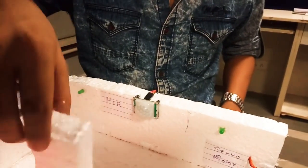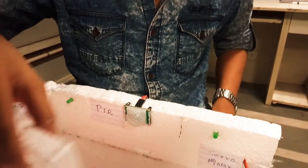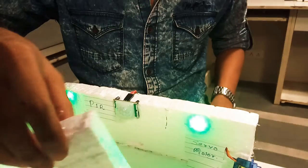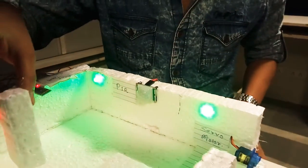Now when entered the room there is a PIR sensor available here which will detect the motion of the object and turn on the light of the room.